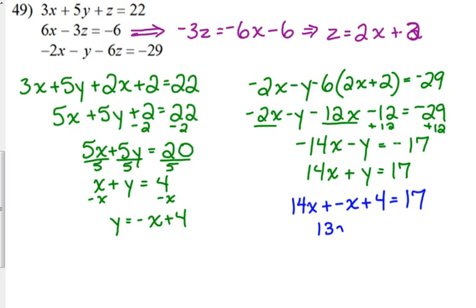So, that gives us 13x plus 4 equals 17. So, subtract the 4. 13x equals 13. So, x equals 1. Well, guess what? We can very easily figure out y and z at this point. Because we just have to go over here and plug it in. So, y is 3. Z is 4.